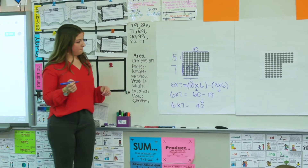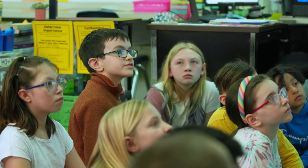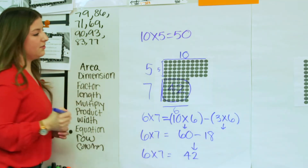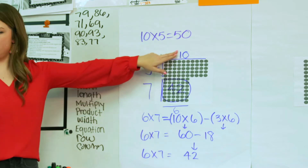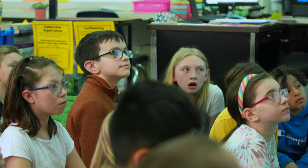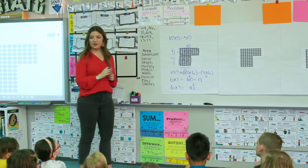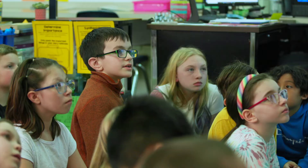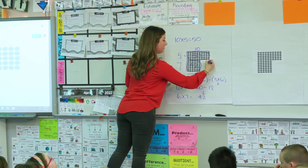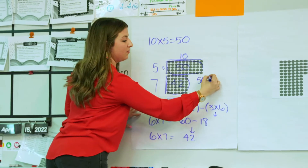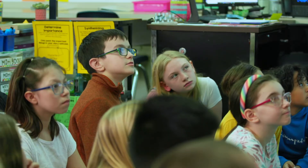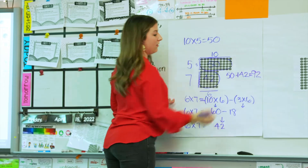And then 10 times 5 equals 50, and you see that with this array. So 42 plus 50 equals 92. And why are you adding 42 plus 50? Because that's the entire array. So our entire array is 50 plus 42, and that equals 92.